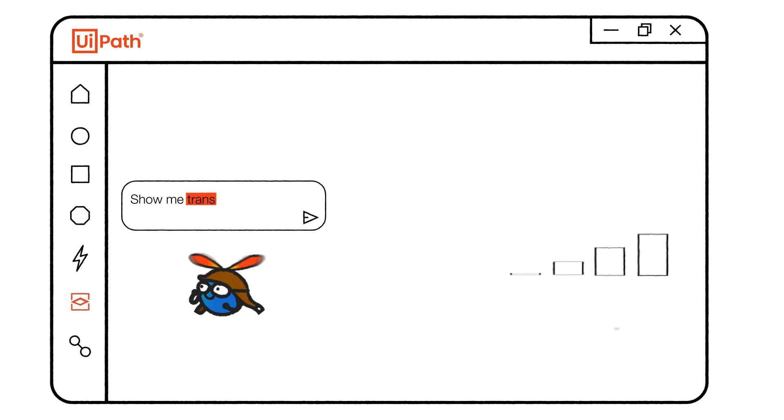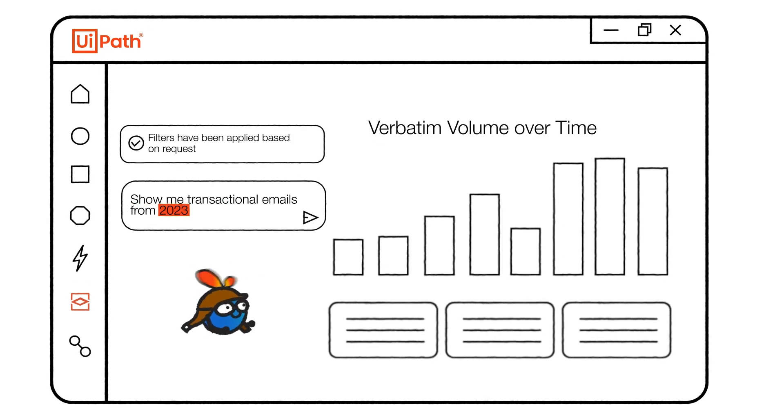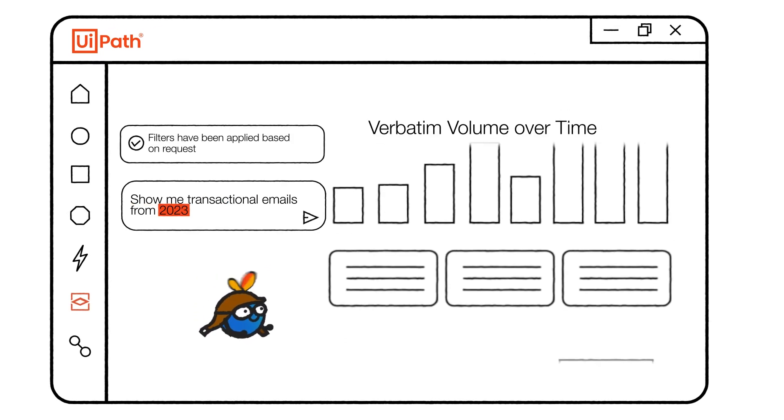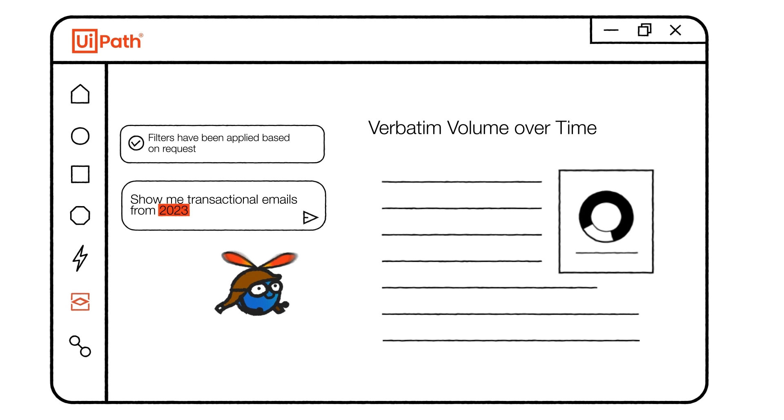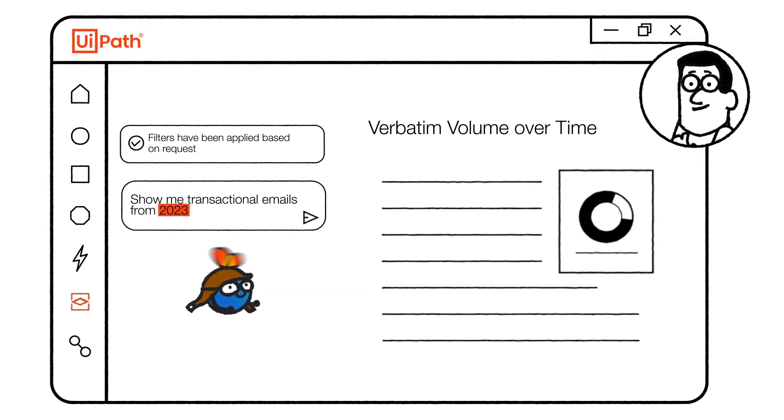Business analysts can use Autopilot to discover deeper insights about automation opportunities. They can ask analytics questions about their automation opportunities in natural language, just like how end users do when requesting an automation.